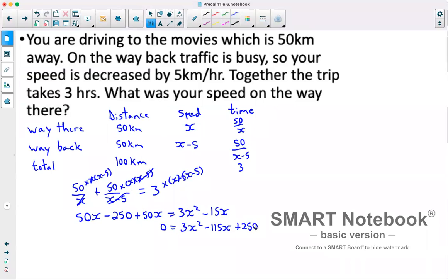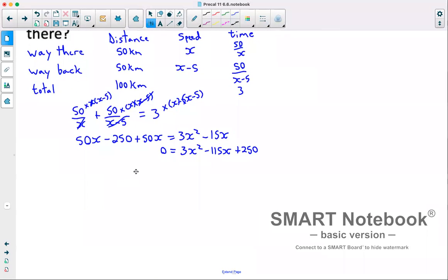Now looking at this, it doesn't look like it'd be easy to do a product sum factoring. So instead, we'll use the quadratic formula. So that was x equals negative b plus or minus the square root of b squared minus 4ac, all divided by 2a. We'll fill in our information. So we have x equals negative of negative 115, so that's positive 115, plus or minus the root of negative 115 squared, minus 4 times 3 times our c value of 250, divided by 2 times our a value of 3.